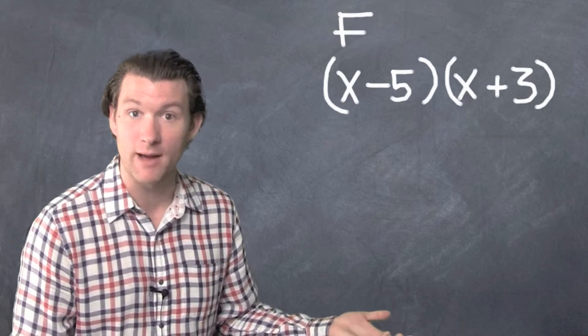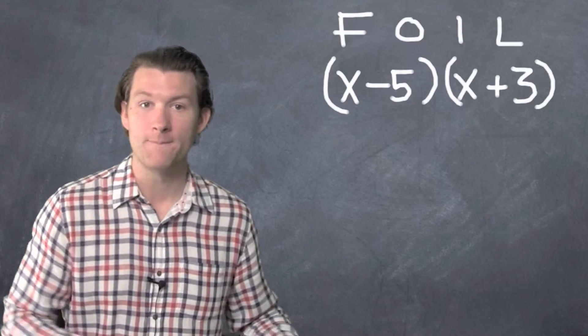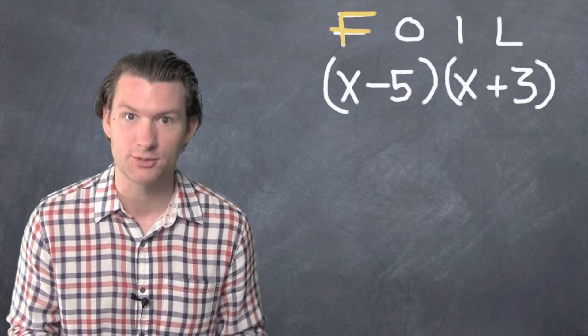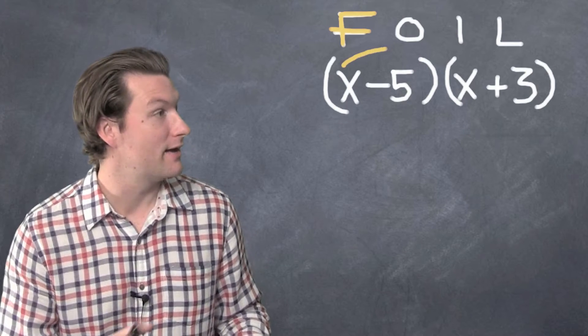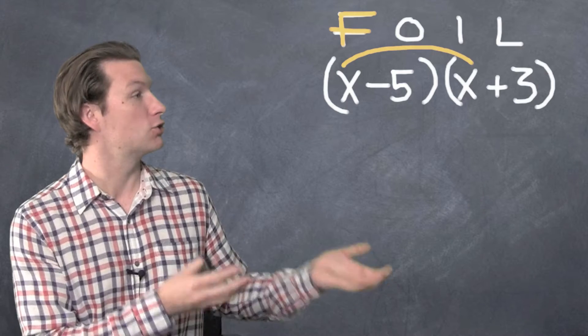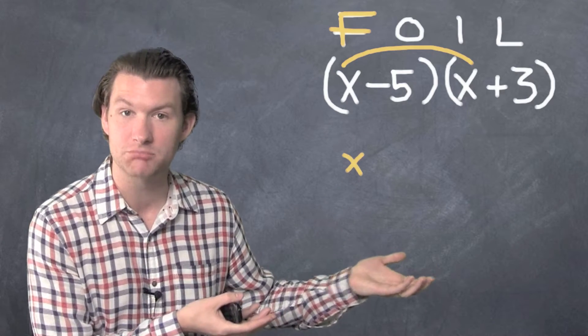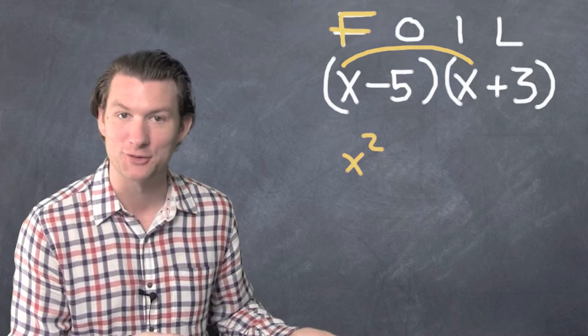Let's multiply them together by foiling. F-O-I-L. F stands for first. Let's multiply the first together. We've got an X and an X. Those are the two first things in the binomials. X times X, X squared. All right, first is done.